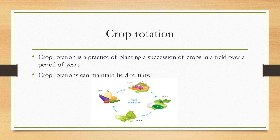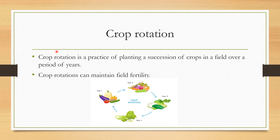Coming to crop rotation, which is the practice of planting a succession of different crops in a field over a period of years. You should change the crops one after the other so that crop rotation maintains field fertility. Making crop rotation increases field fertility.